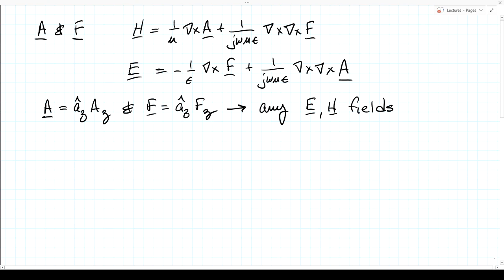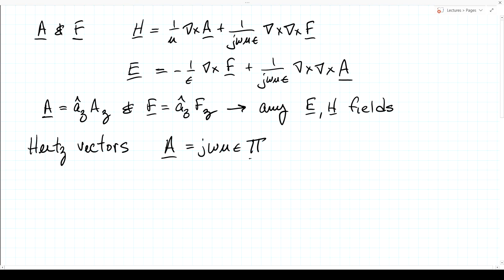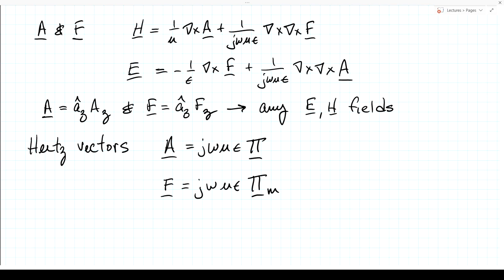As an aside — we won't make use of this, but you might see it in other textbooks or the literature — there are related vectors called the Hertz vectors. For the phasor case, A = jωμε π⃗ and F = jωμε π⃗_m. These are called the Hertz vectors, π and π_m. In the phasor domain they're simply proportional to A and F, but you'll sometimes see those used as an alternate approach.